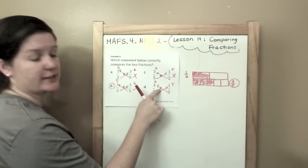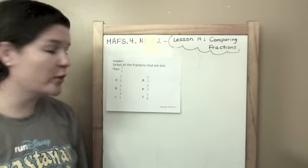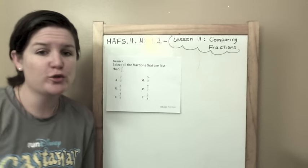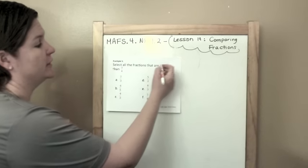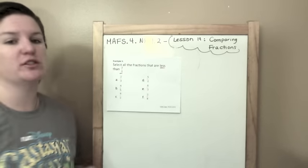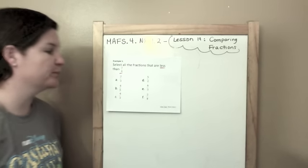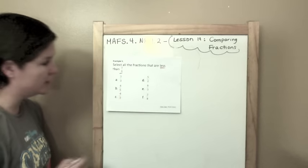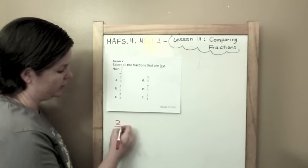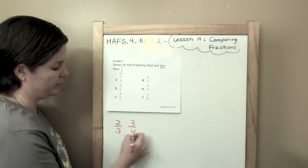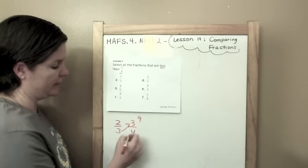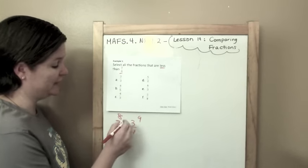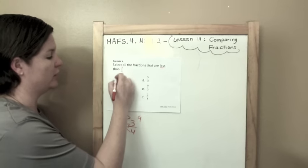So now we're on example 5. Our job right now is to select all the fractions that are less than 3 fourths. So we want 3 fourths to be the greater fraction of the two. Let's use our cross multiplication arrow method. 2 thirds and 3 fourths. 3 times 3 is 9. 4 times 2 is 8. 8 goes with the 2 thirds which is less. So this one is correct.